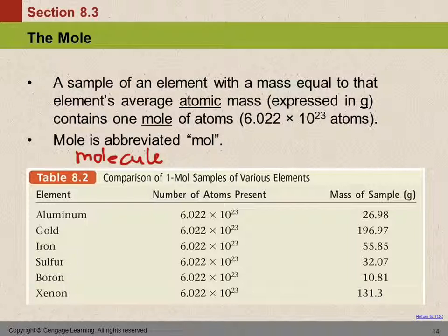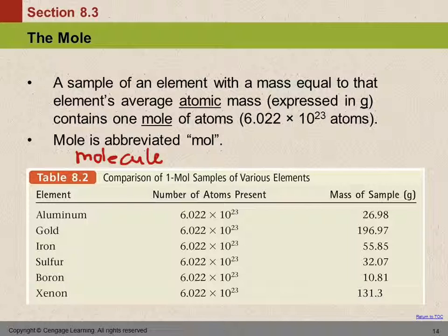Here's a table showing us: aluminum — if we have a mole of aluminum, we've got Avogadro's number of aluminum atoms and the mass is 26.98 grams. But if we have the same number of atoms for different elements, the masses are different. It's because each atom is a different size. An aluminum atom is not the same size as a gold atom. If I have a dozen ping pong balls or a dozen softballs, they're not going to weigh the same, because ping pong balls weigh a lot less.